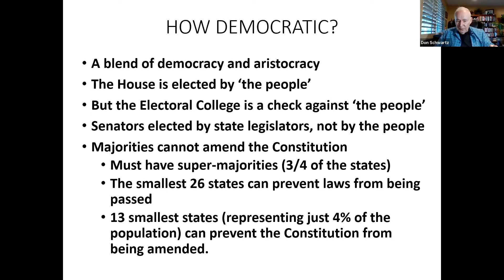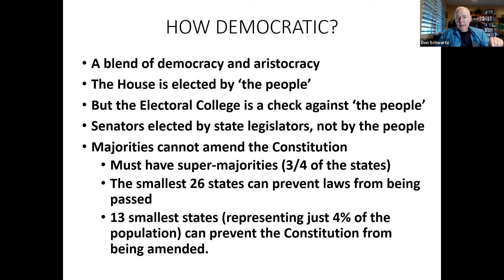In fact, the 13 smallest states can prevent the Constitution from being amended — you need 38 states, so if 13 small states vote against it, it won't be amended. Those 13 smaller states represent just 4% of the population, meaning 4% of the population can reverse the will of 96%. The Constitution was an 18th-century document, and we are stuck with some of its undemocratic features such as the Electoral College.